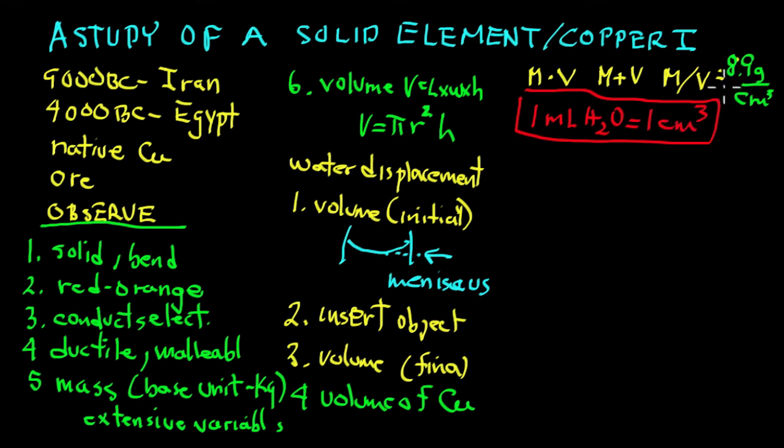So we have a density. Now a density, you can take a whole handful of copper and a little bit of copper. And when you take the ratio of grams to cubic centimeters, you come out with always around 8.9.